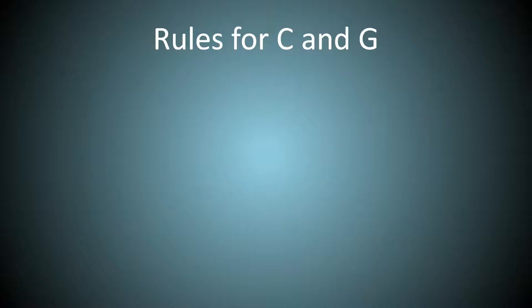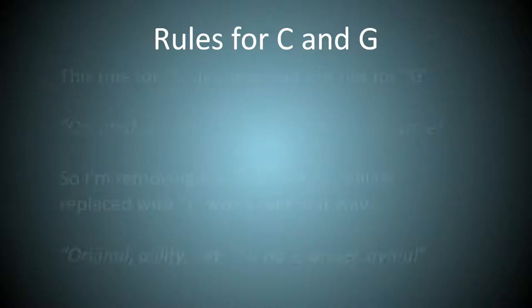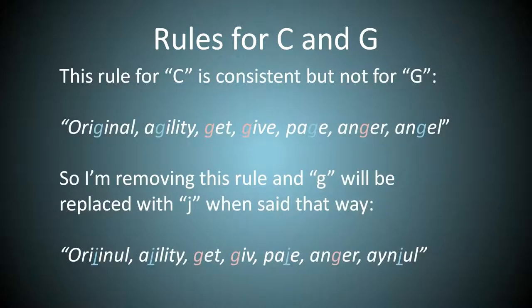Rules for C and G. From Latin we get the rules. C followed by I or E is pronounced as S. G followed by I or E is pronounced as J. This rule is consistent for C, but not for G. So I'm removing this rule, and G will be replaced with J when said that way.